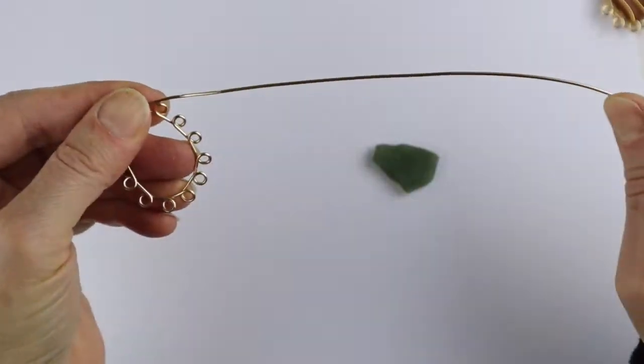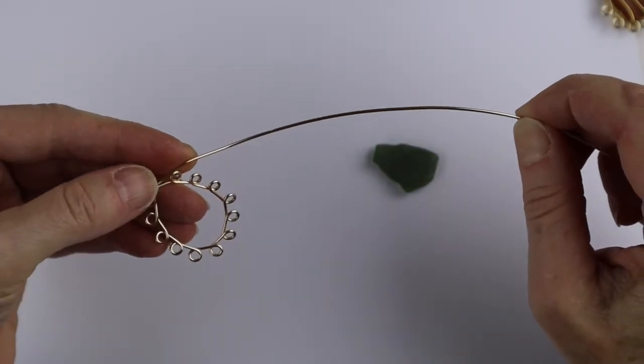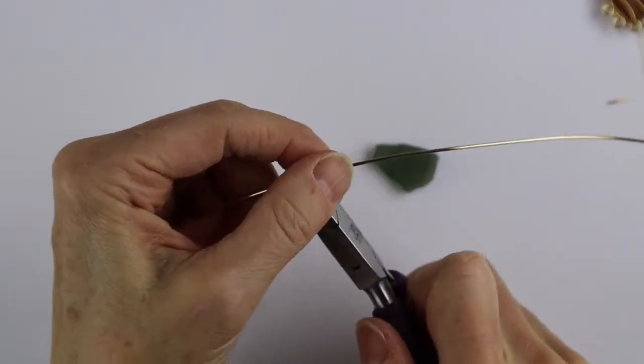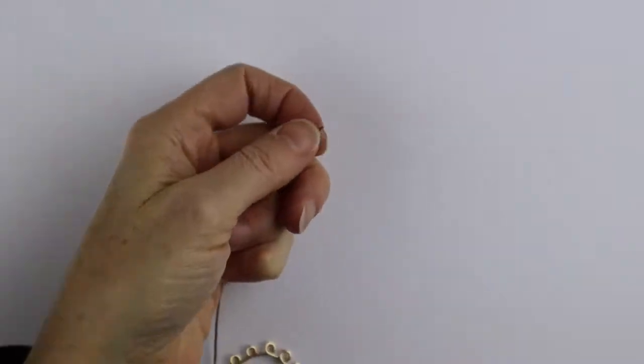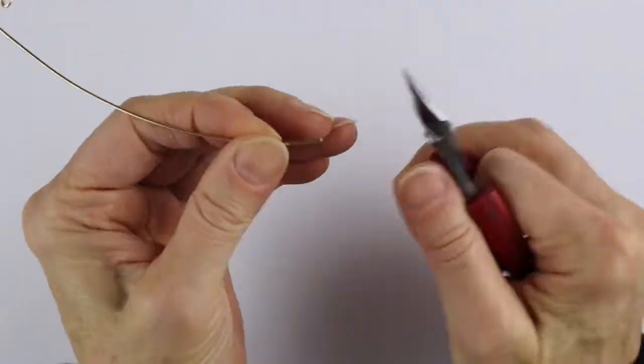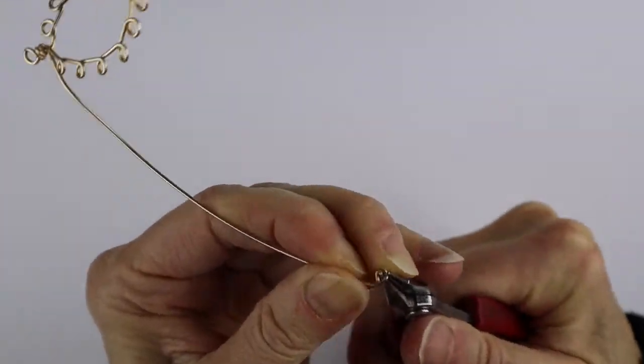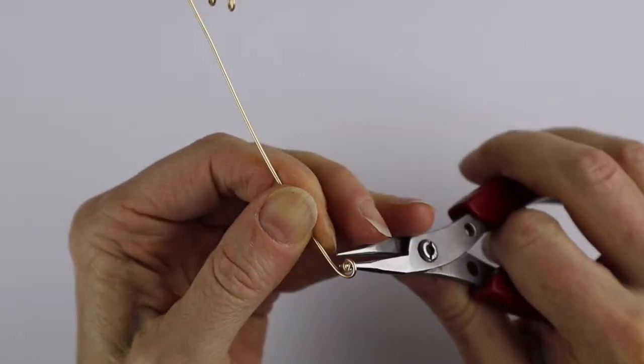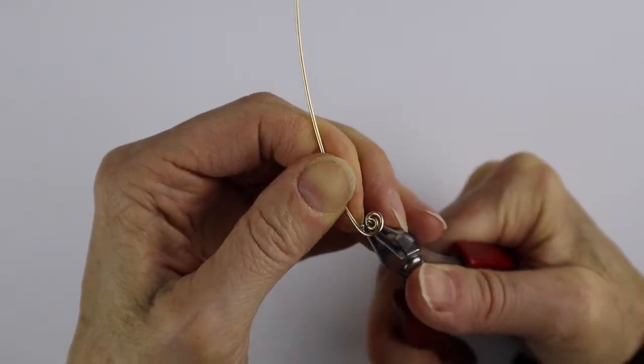Then what you want to do to make the decorative spiral is cut the wire to about five inches—could be a little less—and then with your smaller round pliers you're just going to form a loop at the beginning and then just help it along with the pliers a little bit.